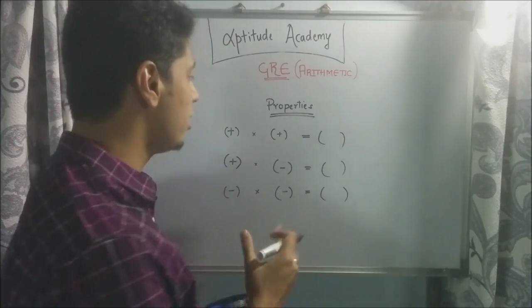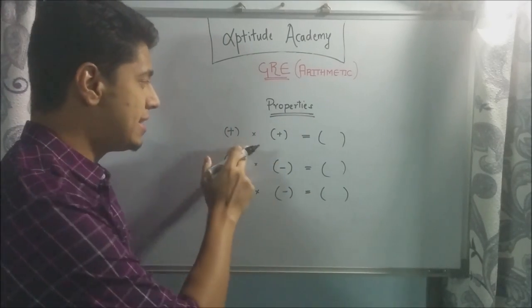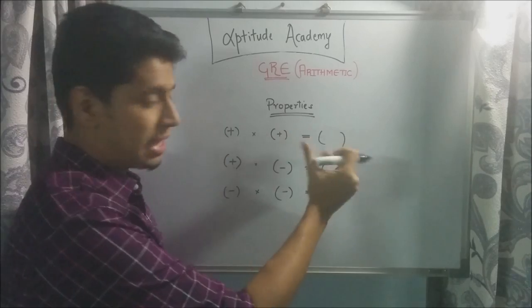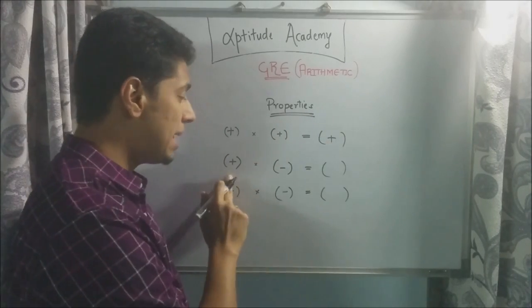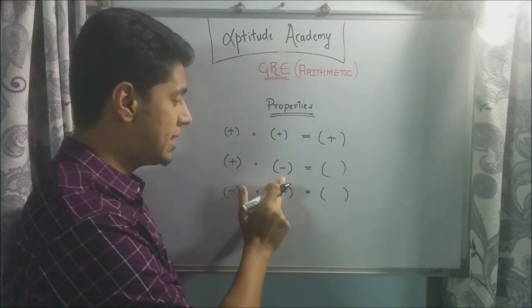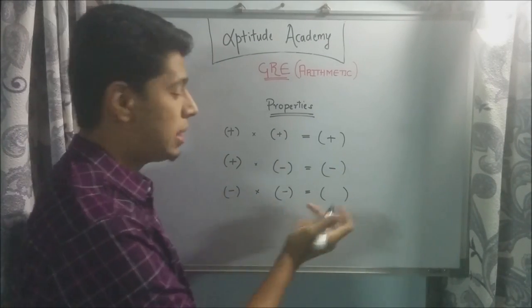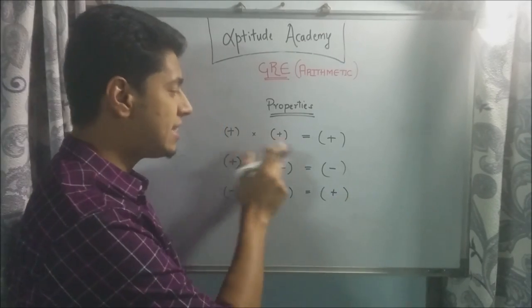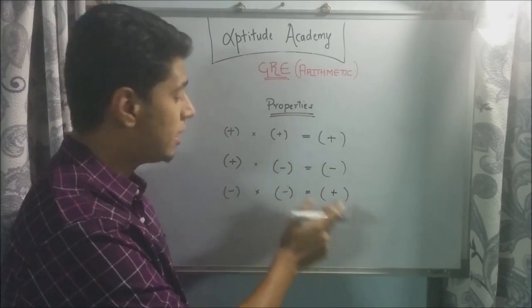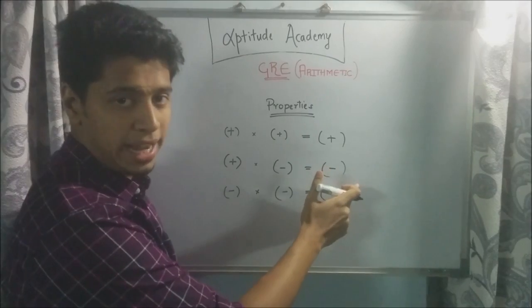Now a couple of properties that are important in integers for the GRE is this: plus into plus will be plus. Plus into minus or minus into plus, when they're different, it will always be minus. And minus into minus will always be plus. So when the signs are same, it's always going to be positive. And when the signs are different, it's always going to be negative.